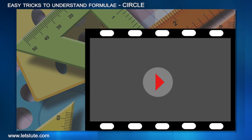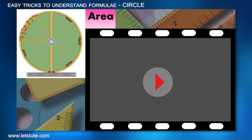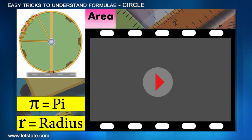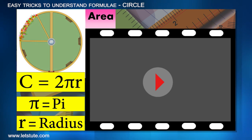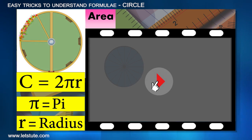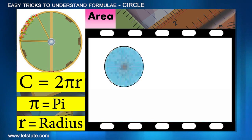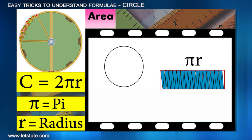The next formula is for the area of the circle. As we said, we will have π and r in the formula. Do you remember how we used the circumference formula to derive the area formula? We converted the circle into a rectangle with sides πr and r, and the area came as πr².